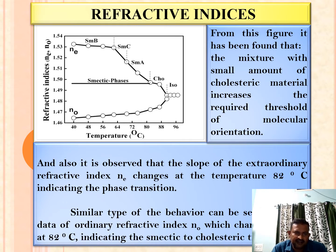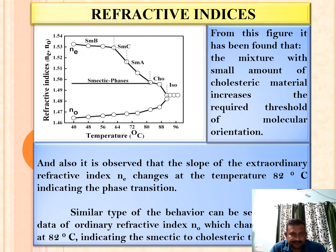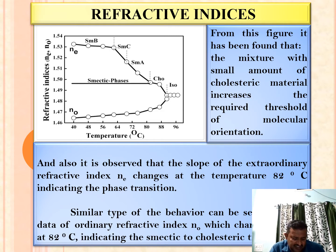Whereas in the case of the ordinary ray, as temperature increases, the refractive index increases gradually. From this figure, it has been found that the mixture with a small amount of cholesteric material increases the required threshold of molecular orientation. It is also observed that the slope of the extraordinary refractive index Ne changes at 82 degrees Celsius, indicating the phase transition for the corresponding smectic phases. Similar behavior can be seen from the data of ordinary refractive index N0, which changes slightly at 82 degrees Celsius, indicating the smectic to cholesteric transition.